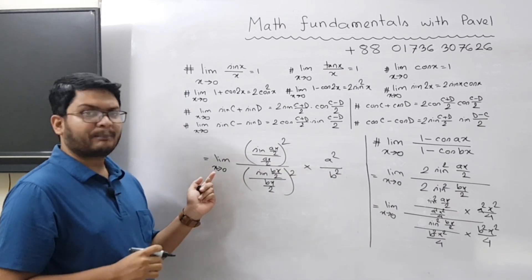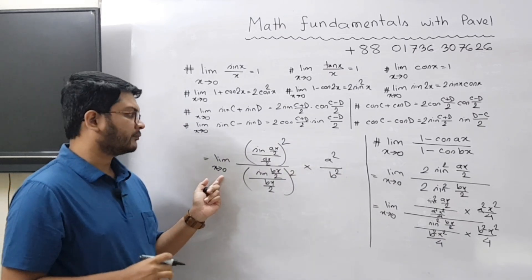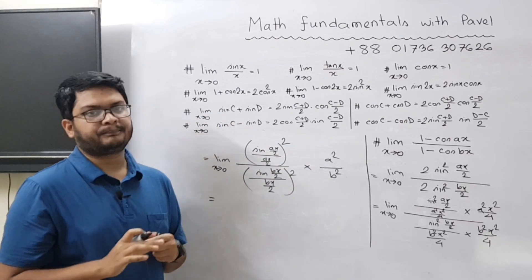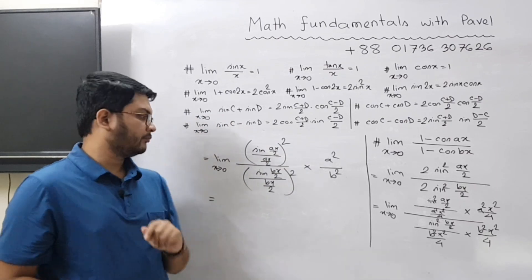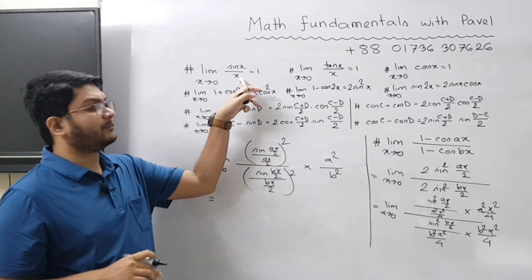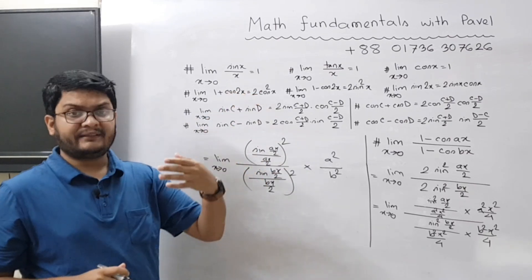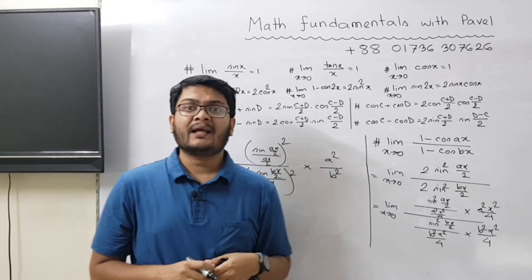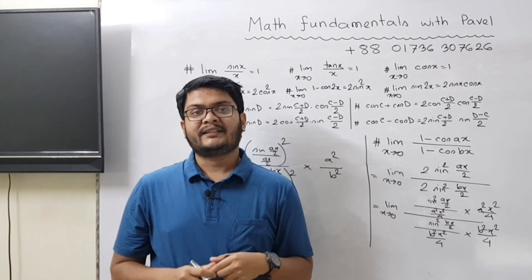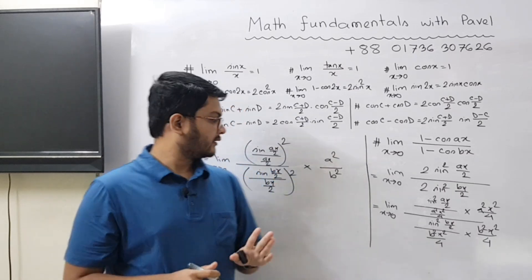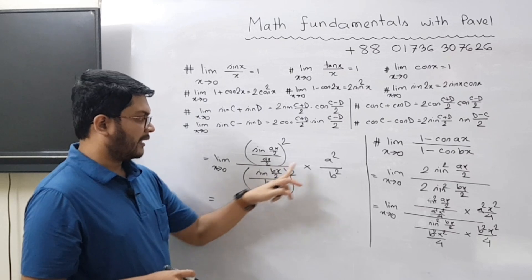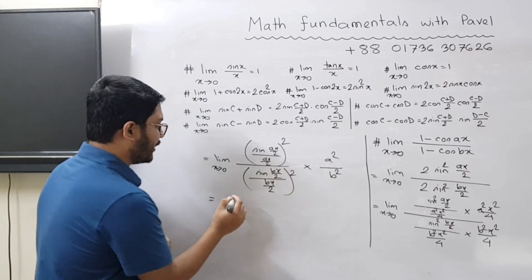Now we apply the limit. The concept is: as theta approaches 0, sin theta divided by theta equals 1. So both the numerator and denominator evaluate to 1, and the rest is a squared divided by b squared.